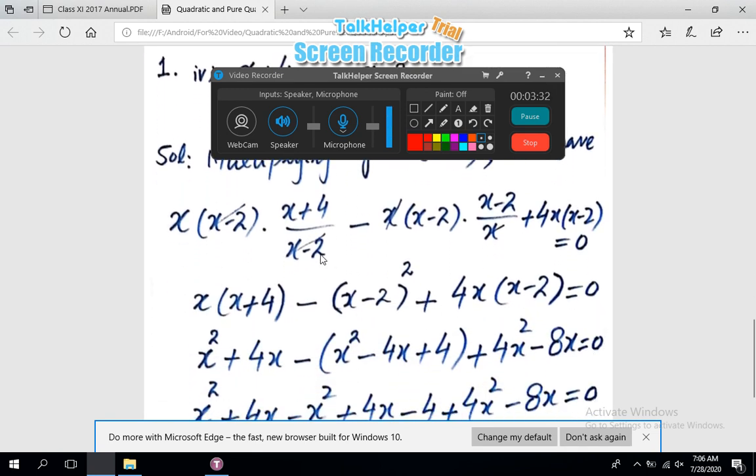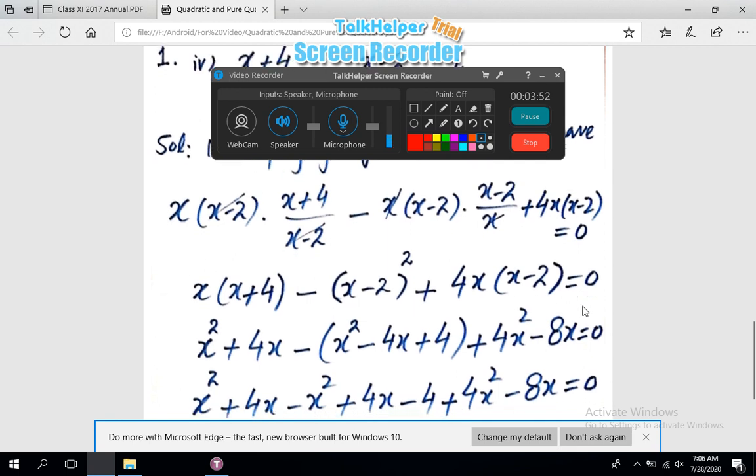Now, (x - 2) cancels with (x - 2) here, x is clearly cancelled, so multiplying the remaining we have x(x + 4) - (x - 2)², that is (x - 2) whole square, plus 4x(x - 2) = 0.